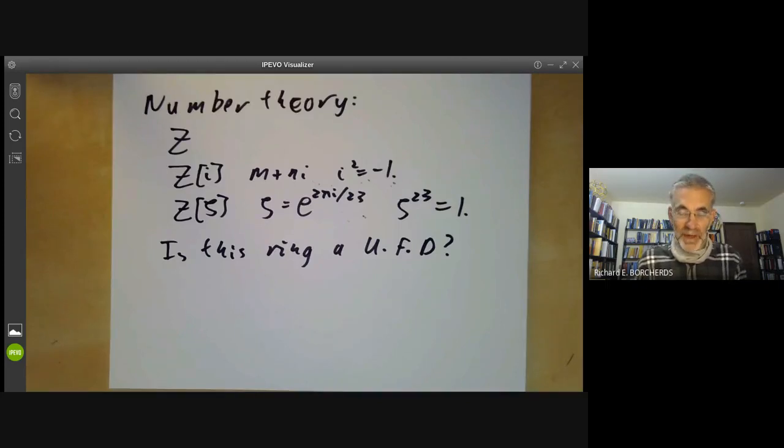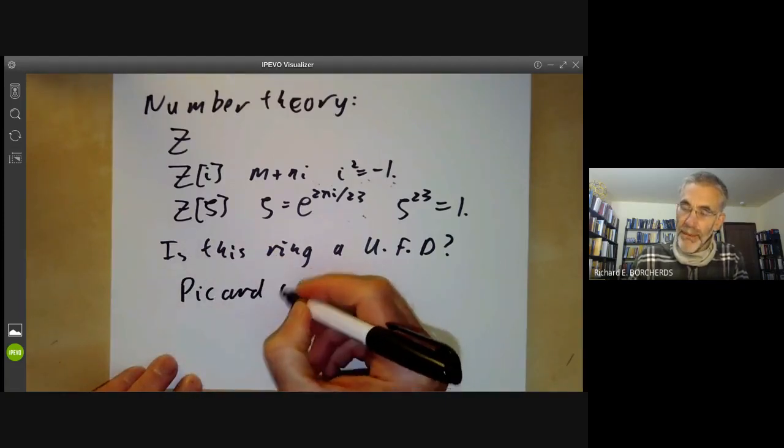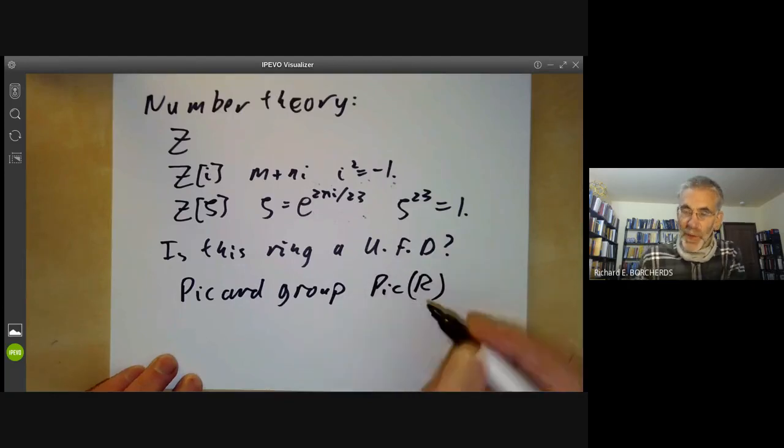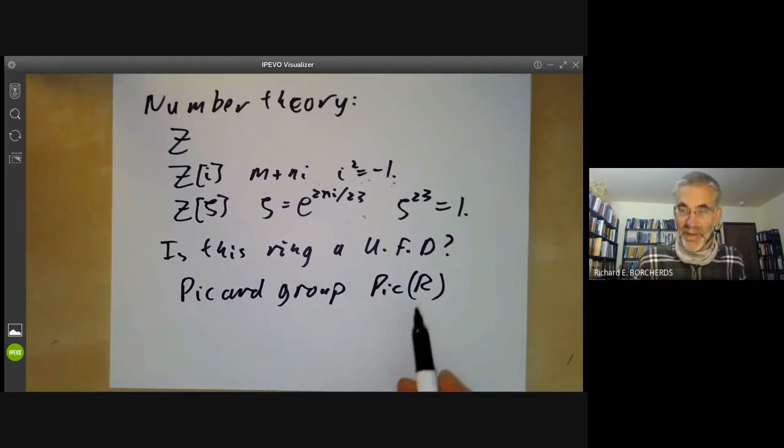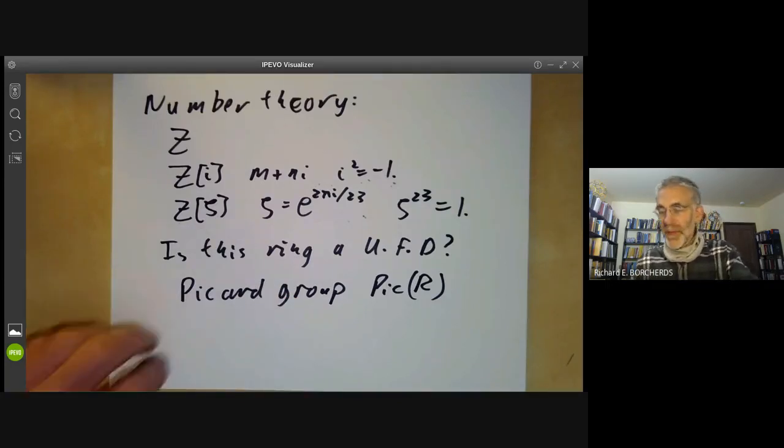Commutative algebra produces invariants like the Picard group, Pic(R) of a ring, which consists of roughly the invertible modules that we will discuss later, and measures how far the ring is from having unique factorization.